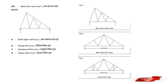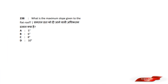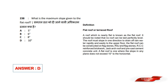Name this roof truss. This figure shows a North Light Steel Truss. Answer option A — North Light Roof Truss. What is the maximum slope given to a flat roof? Options are: 5°, 6°, 8°, 10°. Answer option D — 10 degrees. Maximum slope not exceeding 10 degrees. Answer option D.